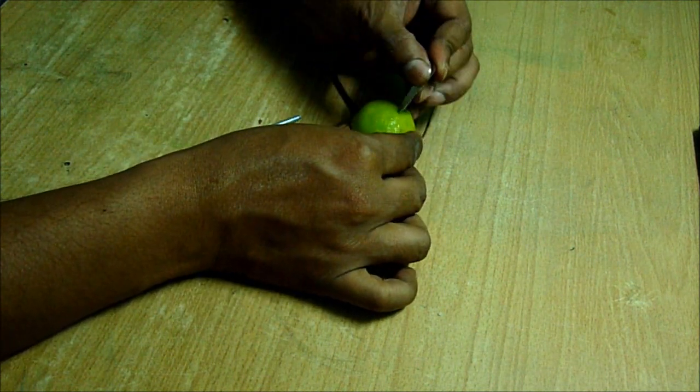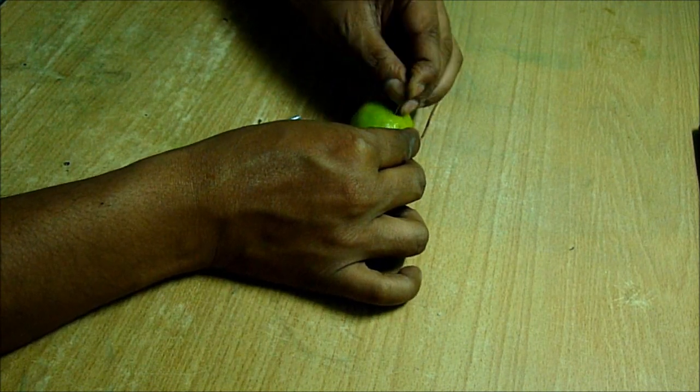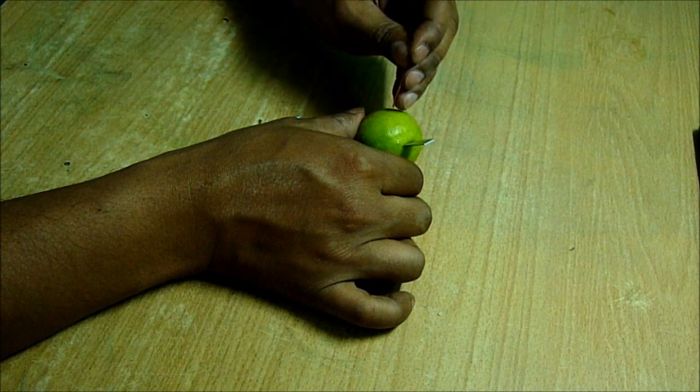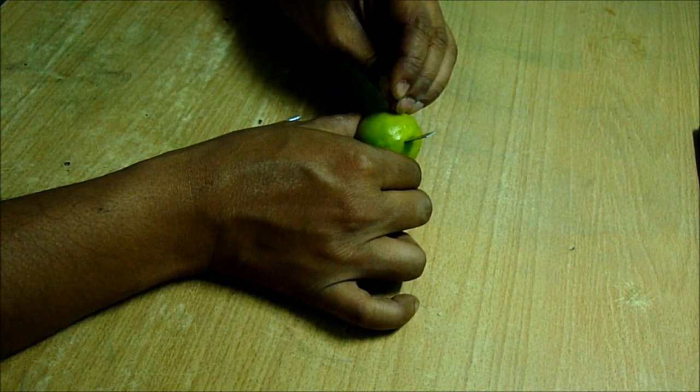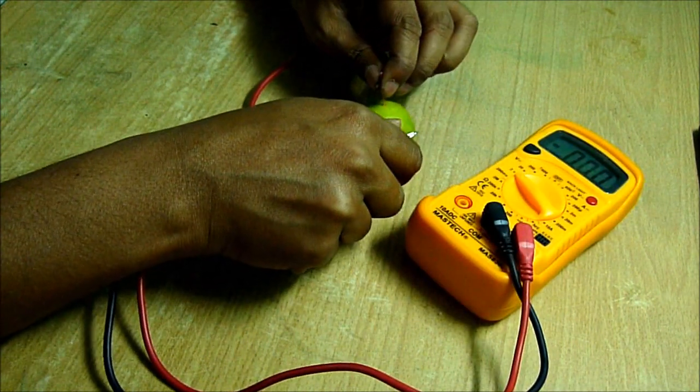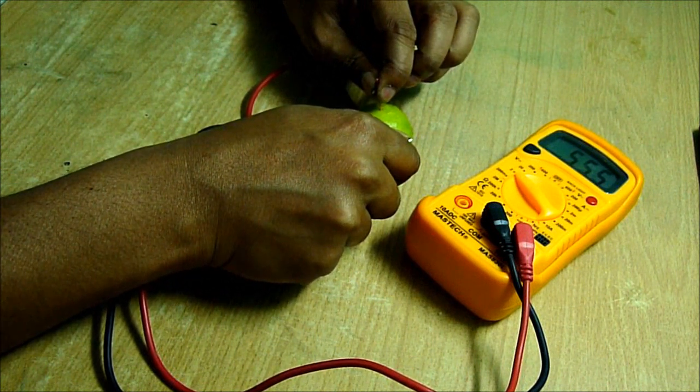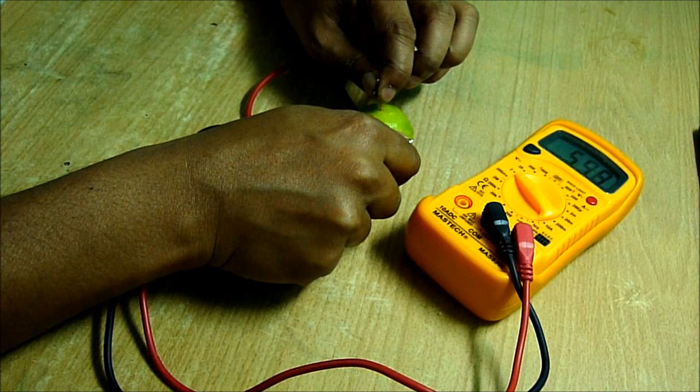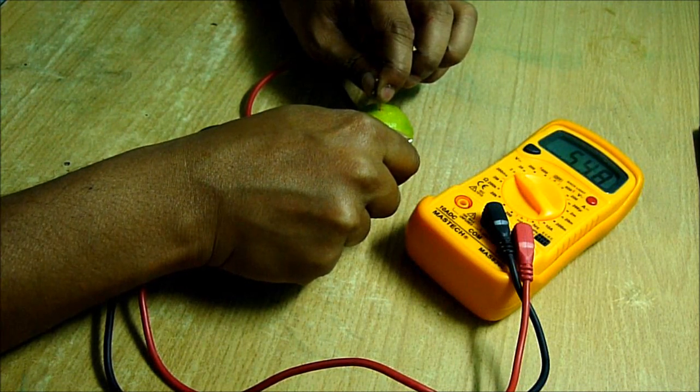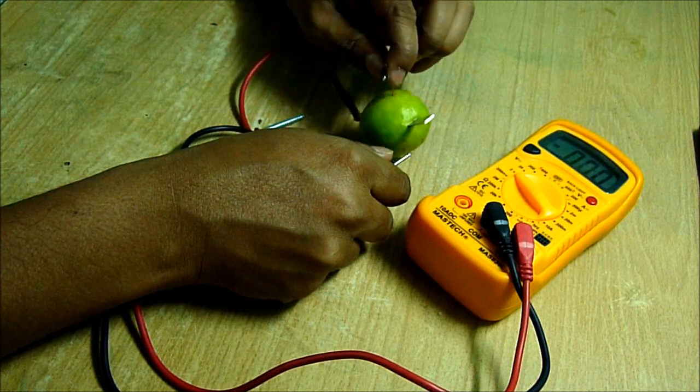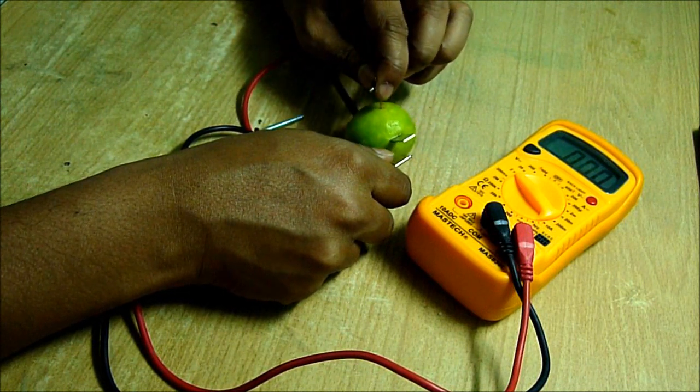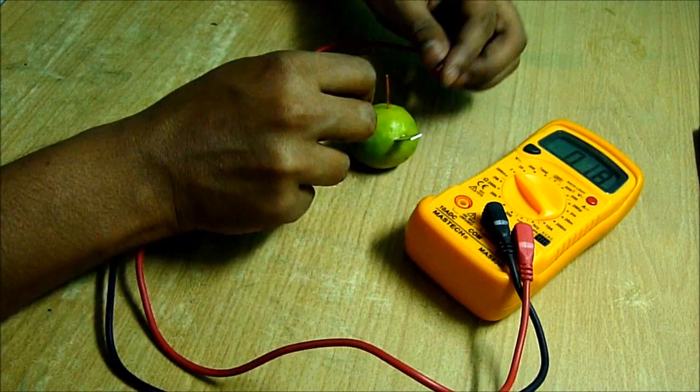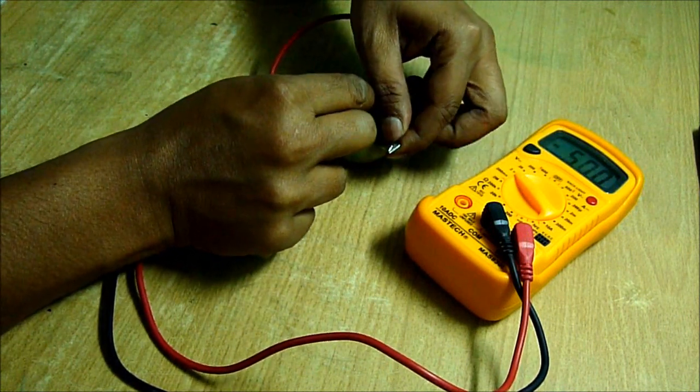This is aluminum and this is copper. It got around 0.55 volt and this copper is positive terminal, anode, and this is the negative terminal. If I reverse, you can see the minus sign.